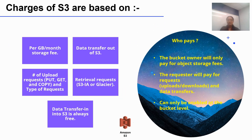How does the pricing model work for data requests? A data owner pays for a bucket storage cost that goes per gigabyte per month — the data storage fee — based on the storage class. Requesters pay the rest: data transfers out of S3, retrieval requests, data transfers in, number of uploads into S3, and types of requests.